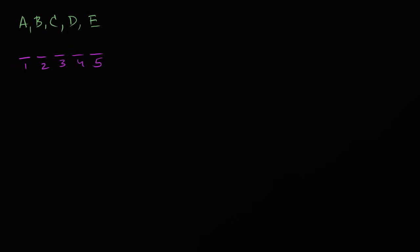we could say, if we seat people in order, five different people could sit in chair one. For each of those scenarios, four different people could sit in chair two — so we have 20 scenarios, five times four. For each of those 20 scenarios, three people haven't sat down yet, so there are three possibilities for seat three. So now there are five times four times three scenarios for seating the first three people.